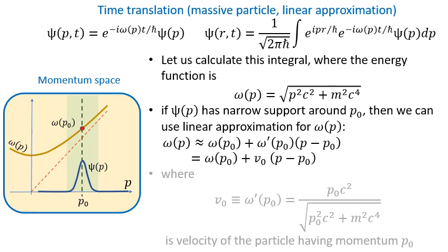The major components of the integrand are shown in the figure on the left. The initial wave function is shown by a blue line. It is centered at the momentum value P0. The brown line shows the energy function omega of P in this region. If the wave function is well localized in the momentum space, then we can use a linear approximation for the omega of P.